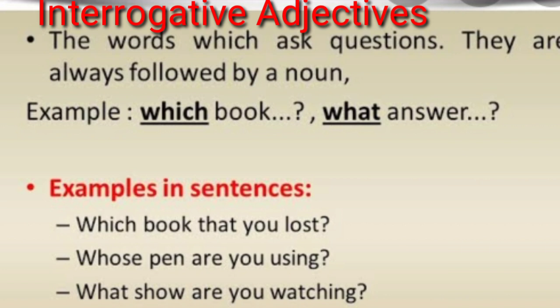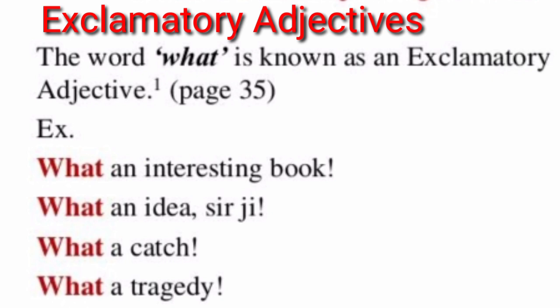Interrogative adjectives are words that ask questions and are always followed by a noun. For example: which book, what answer. Sentence examples: 'Which book did you lose?' — here 'which' is the interrogative adjective. 'Whose pen are you using?' — 'whose' is the interrogative adjective. 'What show are you watching?' — 'what' is the interrogative adjective, because all three words are asking questions.